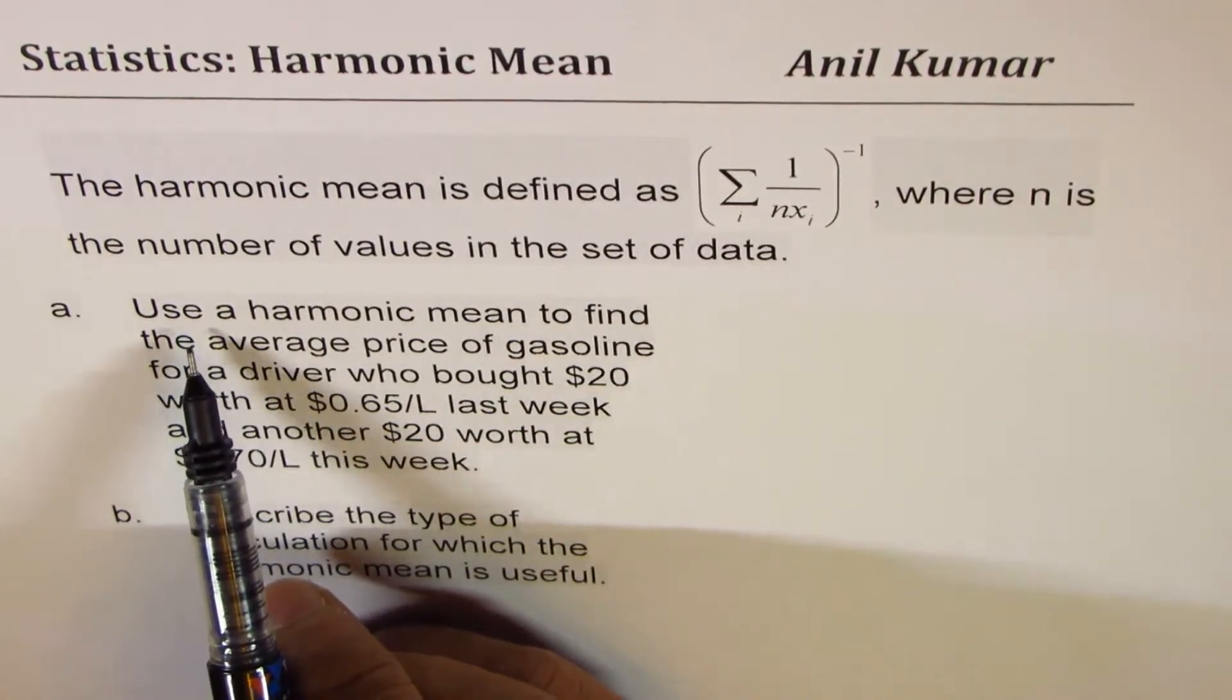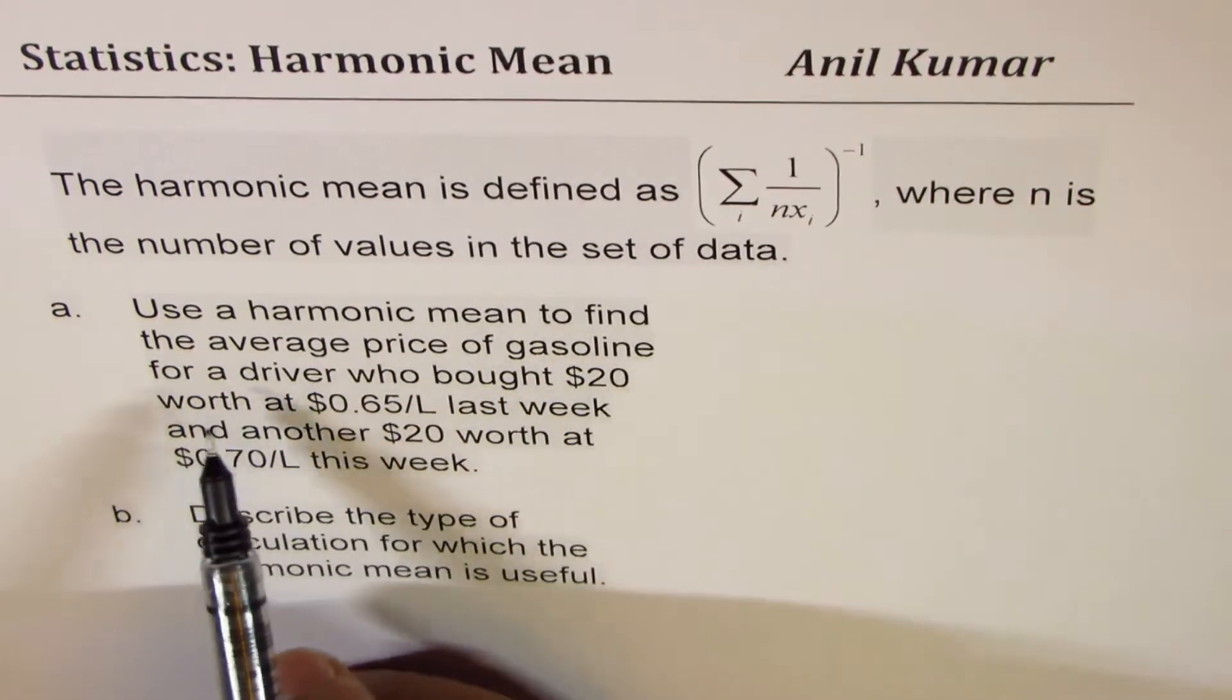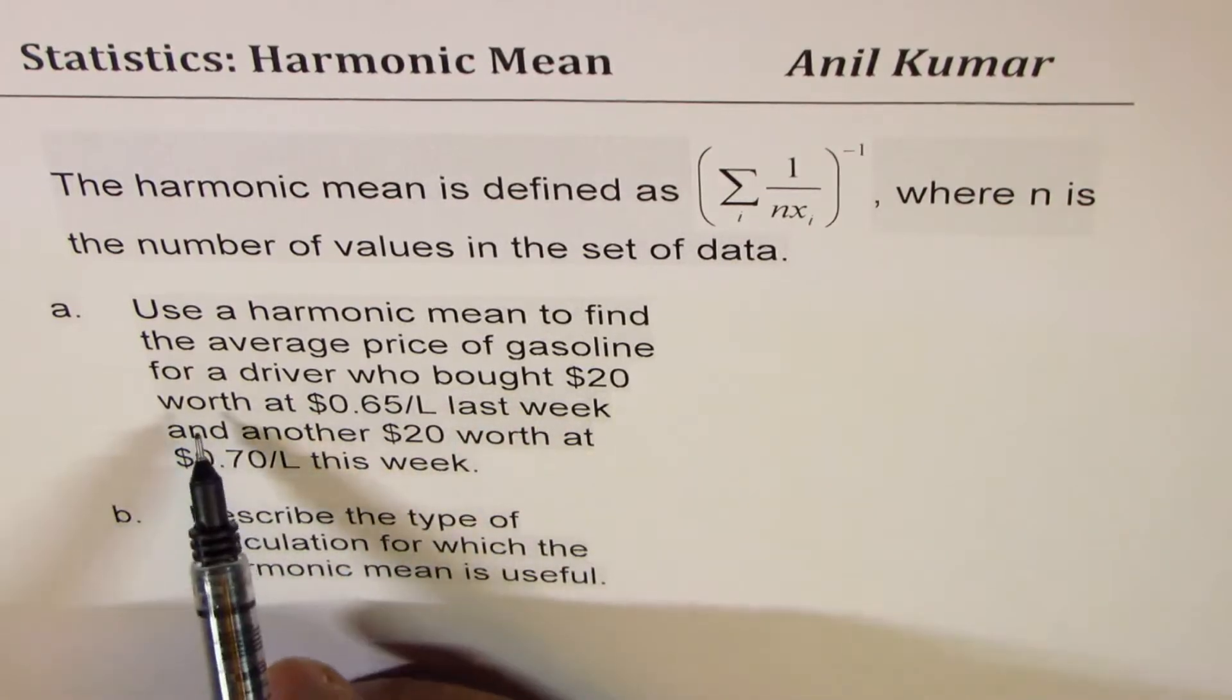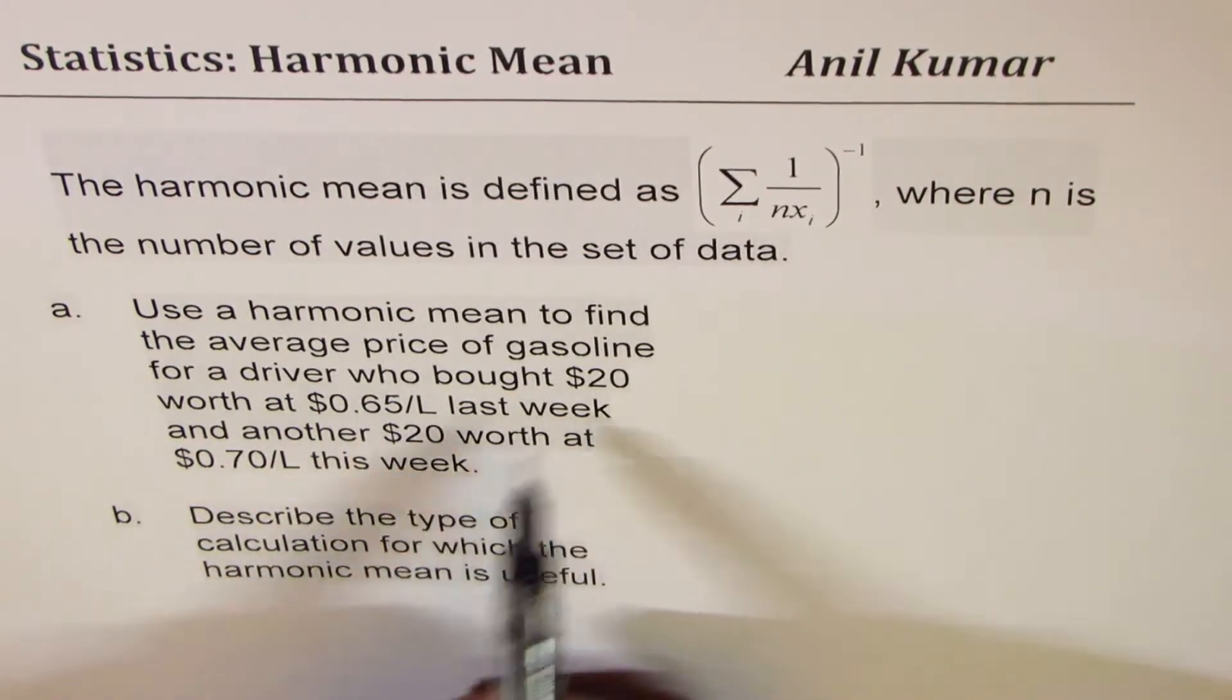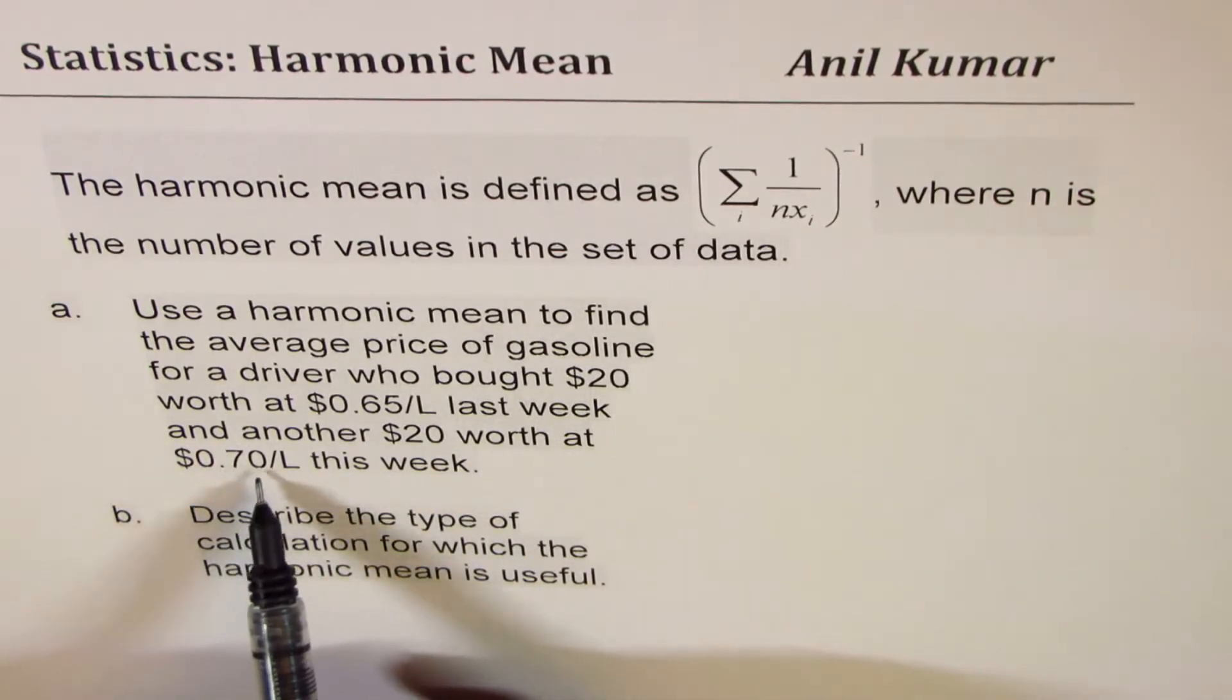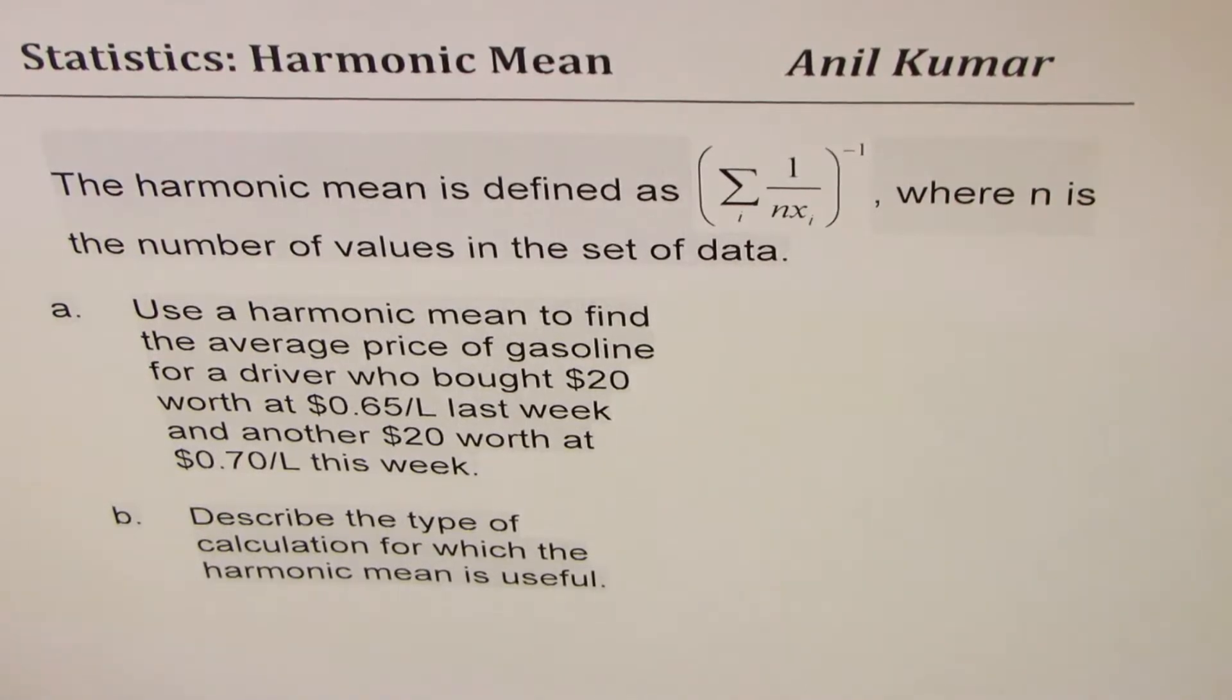The question here is: use a harmonic mean to find the average price of gasoline for a driver who bought $1.20 worth of 65 cents per liter last week and another $1.20 worth at 70 cents per liter this week. Part B is: describe the type of calculation for which harmonic mean is useful.